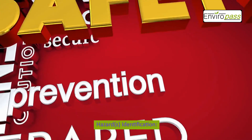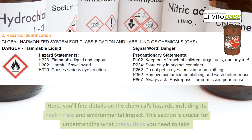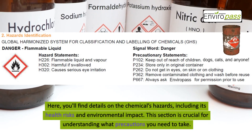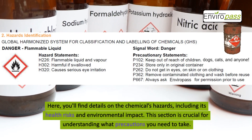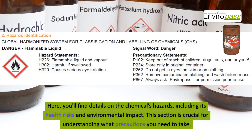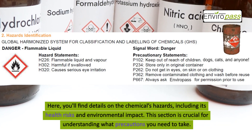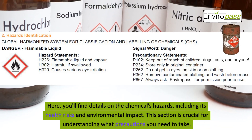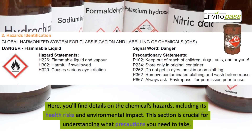Section 2 is Hazard Identification. Here you'll find details on the chemical's hazards, including its health risks and environmental impact. This section is crucial for understanding what precautions you need to take.